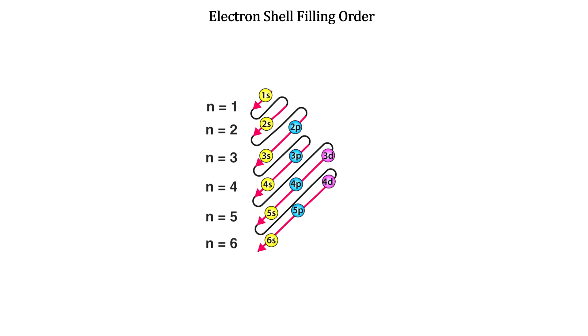Note that 4s is filled before 3d. This is because electrons in a sub-shell tend to repel each other more than electrons in different sub-shells.